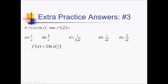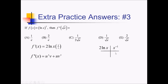That was f prime. For f double prime, we need to take the derivative of a product. I would much rather use the product rule than the quotient rule. So using u prime v plus u v prime, I've got factors of 2 ln of x and x to the negative 1. Derivative of 2 ln of x is 2 over x, and this next derivative is negative x to the negative 2. Before I multiply all this out, let me go ahead and plug in radical e inside the box.